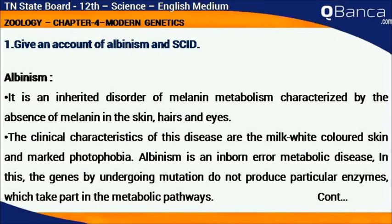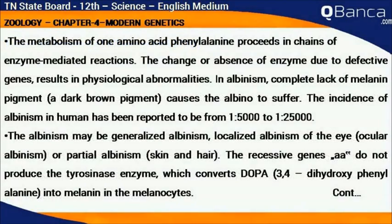Albinism is an inborn error metabolic disease. The genes, by undergoing mutation, do not produce particular enzymes which take part in the metabolic pathways. The metabolism of the amino acid phenylalanine proceeds through a chain of enzyme-mediated reactions. The change or absence of an enzyme due to defective genes results in physiological abnormalities.